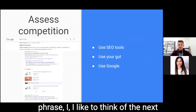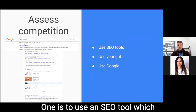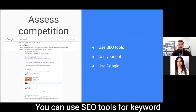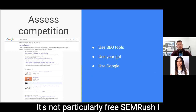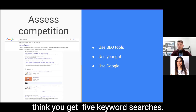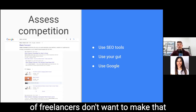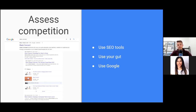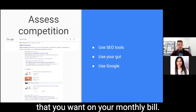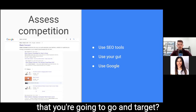Once you've chosen your key phrase, the next step is to assess competition. There are three ways: use an SEO tool — you can get a trial of Ahrefs for $7 for seven days, and SEMrush gives five free keyword searches — but if you're doing this at scale you'll need to pay, which can exceed $100 a month. If you don't want to pay, you could just use your gut: go to Google and see who is ranking for the particular key phrase you're targeting.